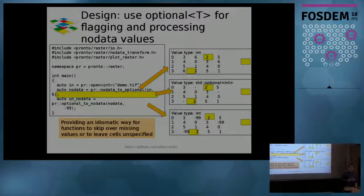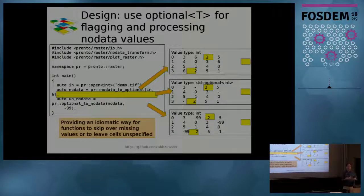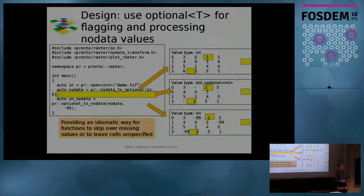In working with raster data, we often have missing values, and working with them can be cumbersome. But in C++ we have the optional data type, and this library uses the optional data type for missing values, so it becomes a very logical way of dealing with missing data. Every function that produces missing data knows how to do it, and every function that can account for missing data knows how to recognize it.